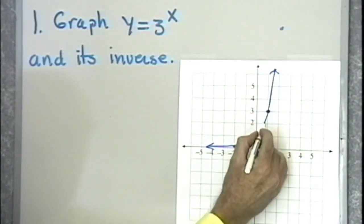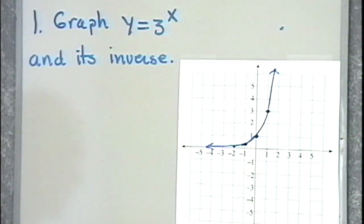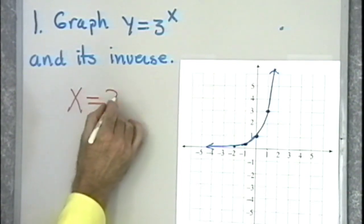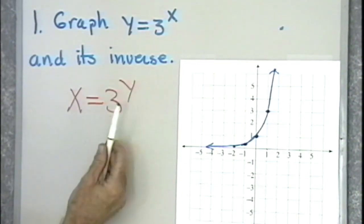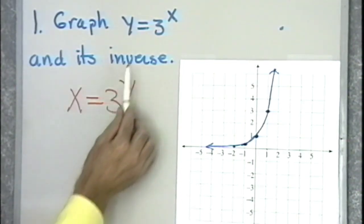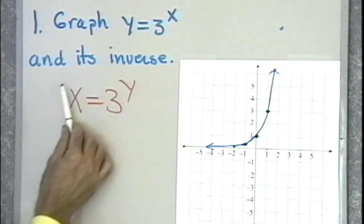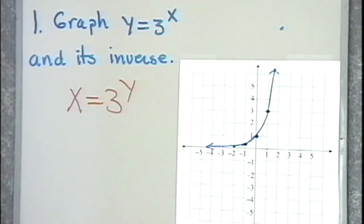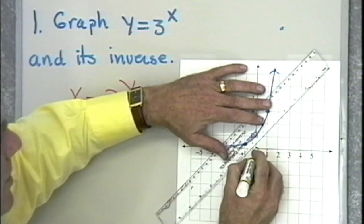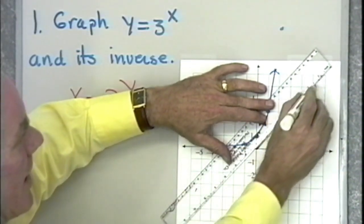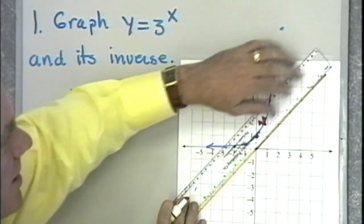So here is the graph of y equal 3 to the x. The graph of its inverse is the graph of x equal 3 to the y, because to find the equation of the inverse of a function from the function itself, we simply exchange x and y in the equation. Now, I could graph this by finding ordered pairs that satisfy the equation, but there's actually an easier way, and that is to draw the line y equal x, which I'm going to do as soon as I find my ruler. Here's the line y is equal to x.